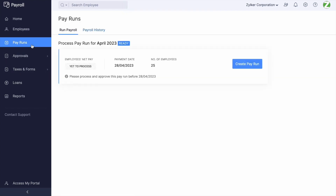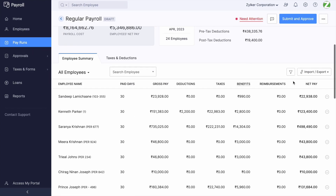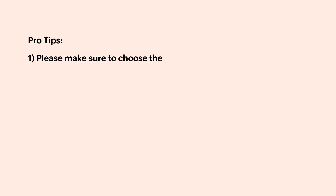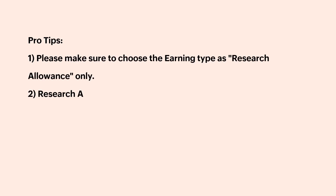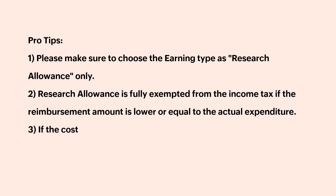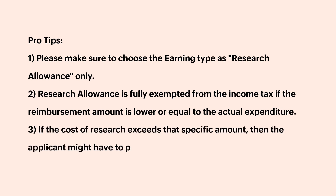Pro tips: Please make sure to choose the earning type as Research Allowance. Research Allowance is fully exempted from income tax if the reimbursement amount is lower than or equal to the actual expenditure. If the cost of the research exceeds the reimbursement amount, the applicant might have to pay tax on the rest of the amount.